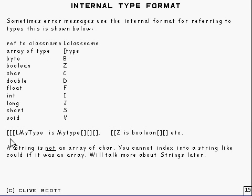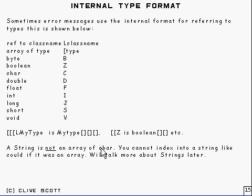So for instance, three left brackets followed by L and a type name represents a three-dimensional array of that type. And, for example, two left brackets followed by Z is an array of an array of booleans, and so on.